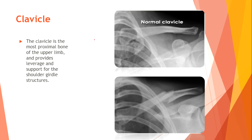Clavicle. The clavicle is the most proximal bone of the upper limb and provides leverage and support for the shoulder girdle structures. Here we see the normal clavicle, and if we scrutinize the cortex of the bone, we can identify the site of a fracture.